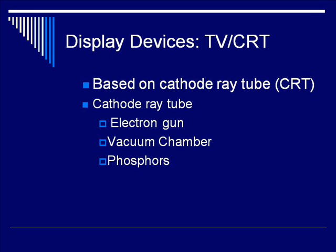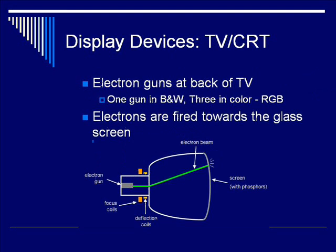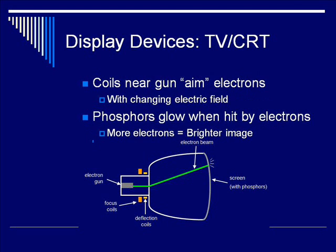A cathode ray tube, or CRT, consists of an electron gun, a vacuum chamber, and phosphors. These phosphors are chemical spots that light up a specific color when hit by electrons from the electron gun. The electron guns are at the back of your TV. If we're talking about a black and white TV, there is one electron gun. In a color TV there are three, each corresponding to red, green, or blue. Electrons are fired by these guns toward the glass screen, aimed by electromagnetic coils near the gun which sweep the beams of electrons across the screen. When the phosphors are hit by these electrons, they glow. The more electrons, or the higher the voltage you use, the brighter the image you get.